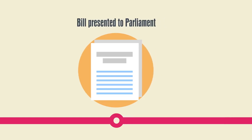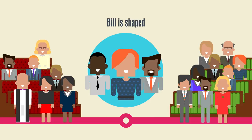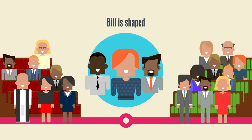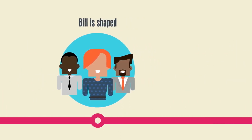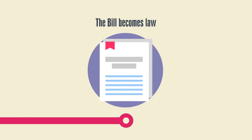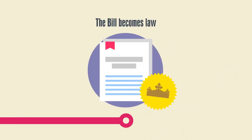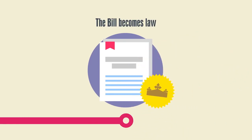MPs and members of the House of Lords comment on, debate, or amend the bill through several stages. At the end of the process, apart from very rare circumstances, it must be agreed by both houses. It's then passed to the monarch, who gives formal approval, or royal assent, and the bill becomes law, called an Act of Parliament.